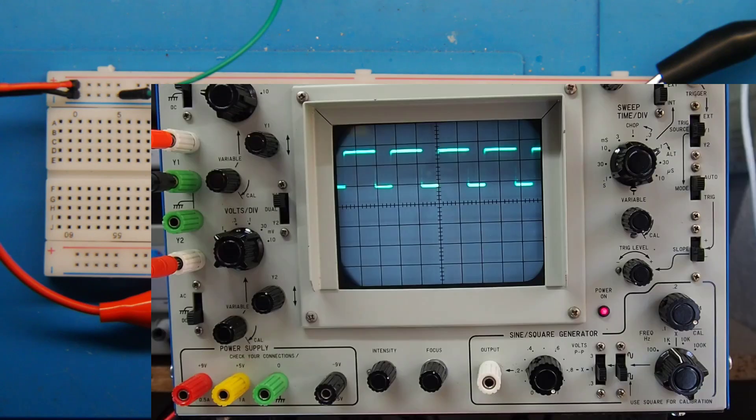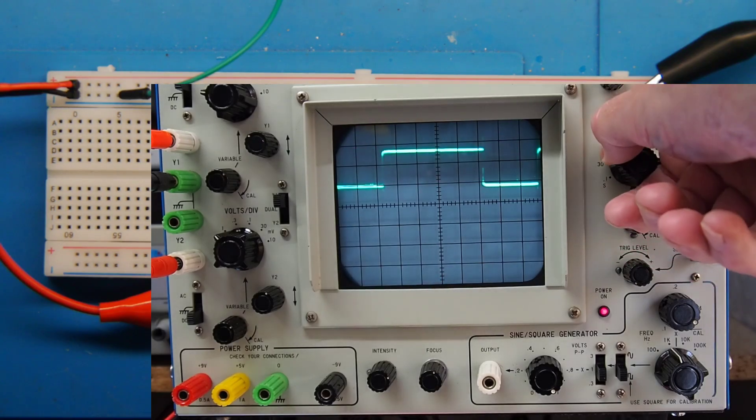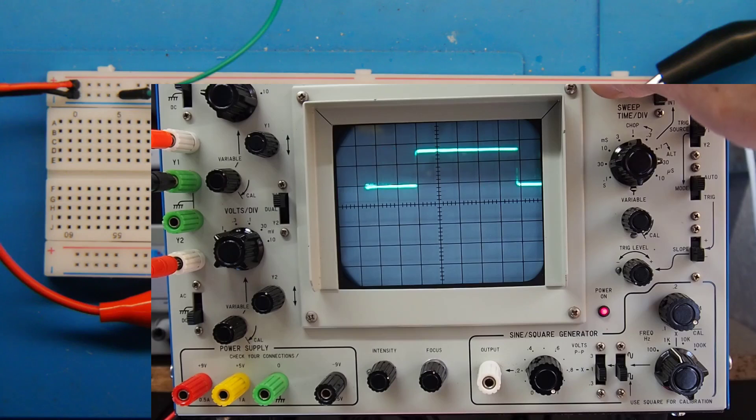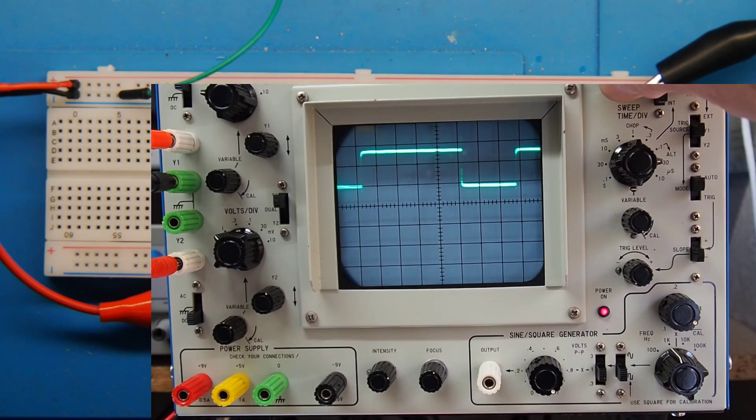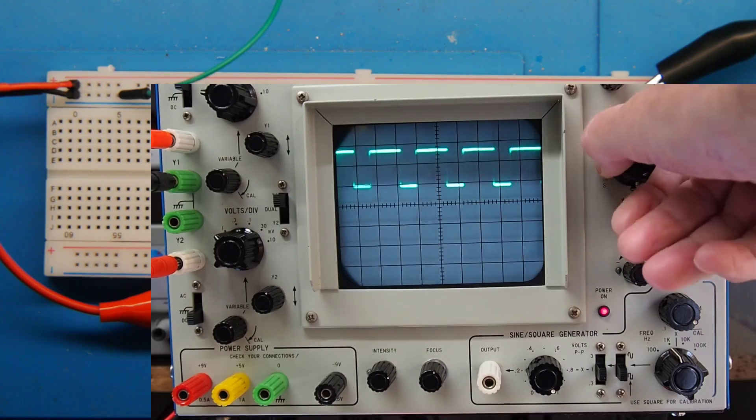So here's the square wave output and as you can see we haven't got an equal mark-space ratio. If I just extend the time base you can see it's high for a lot longer than it is low, but we could fiddle about with the resistance and sort that out should we so desire.